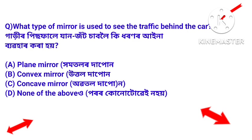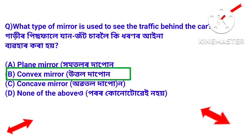Next question: what type of mirror is used to see the traffic behind the car? Answer: Convex mirror. The mirror used in a car's rear-view to see the traffic behind is a convex mirror — uttol da pun.